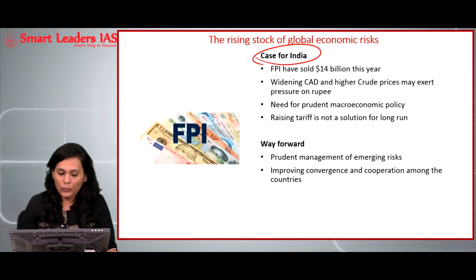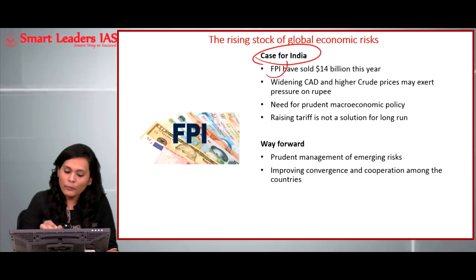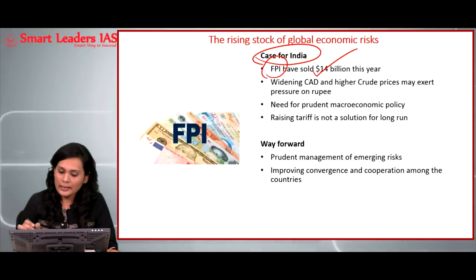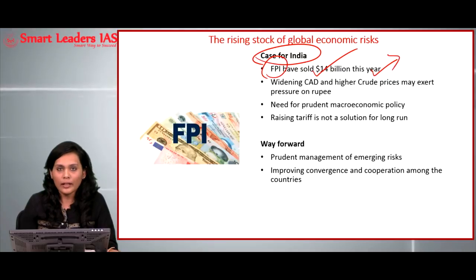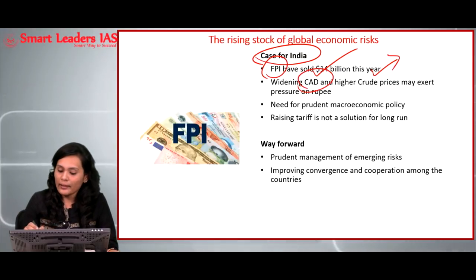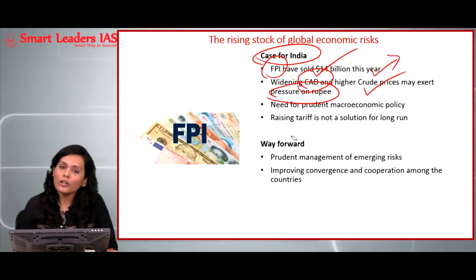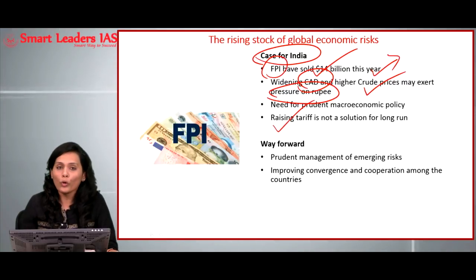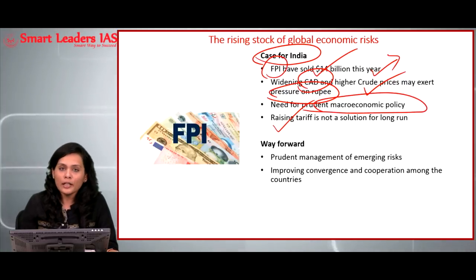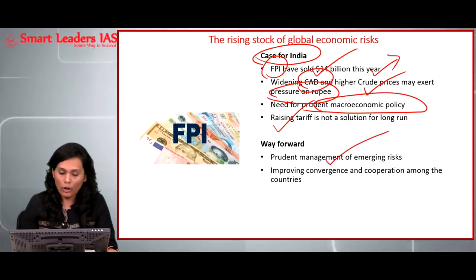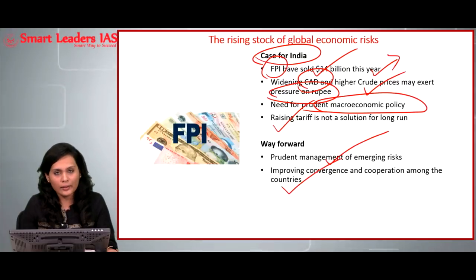Now let's see how these factors impact the Indian scenario. Because of these factors, foreign portfolio investors have sold about 14 billion dollars' worth of stocks out of India. One important factor for this is the hike in the US federal rate. The second factor is the widening Current Account Deficit and higher crude oil prices, which will definitely put pressure on the Indian rupee. Rising tariff rates alone won't be enough as a short-term solution; we need a long-term solution with prudent macroeconomic policy to bring stability to our country, achieved by improving convergence and cooperation between countries with similar scenarios.